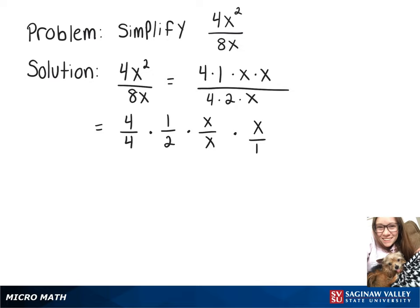So then we can cross off the numbers that are just going to simplify to 1, which would be 4 over 4 and x over x. Then what we're left with is 1 times x on top, which is just x, over 2 times 1, which is 2.